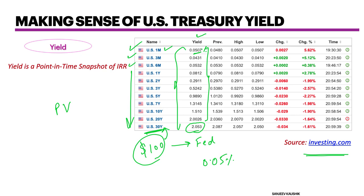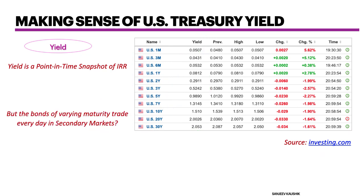This process of locking in your yield by buying bonds of varying maturity is called bond laddering — just a new concept, no direct bearing on what we cover next. There are bonds of varying maturity trading every day in secondary markets. If you're after a bond expiring in seven years, it's hard to find exactly seven-year maturity — some could be seven years two months, seven years three months, six years nine months, and so on.